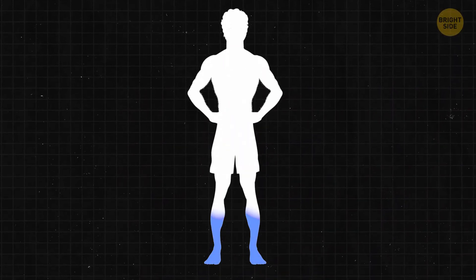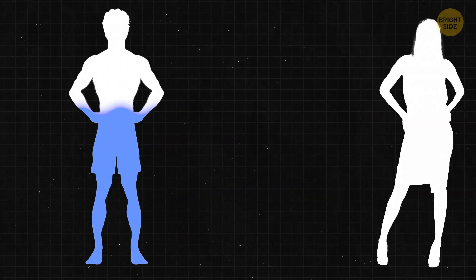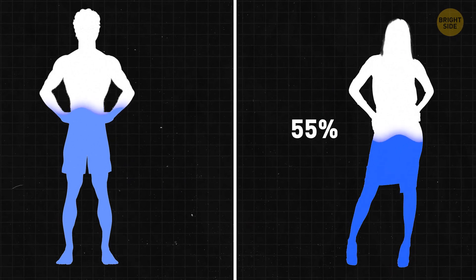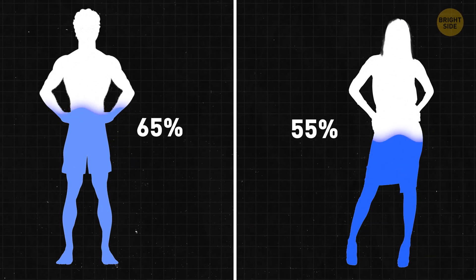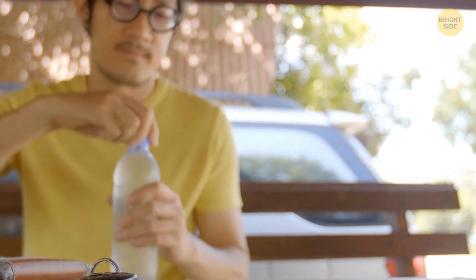More than half our bodies are made of water. 55% if you're a lady, and 65% if you're a gentleman, to be precise. To make sure this water balance is always in check, our bodies come equipped with a hydration monitor.